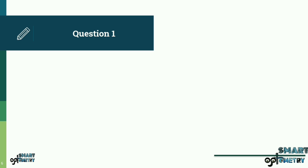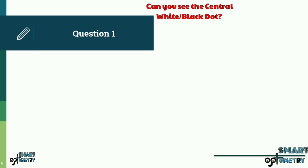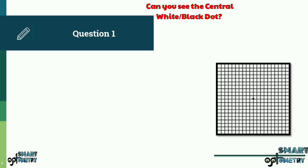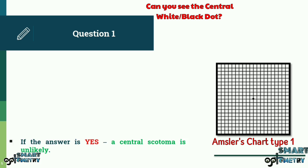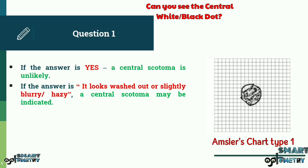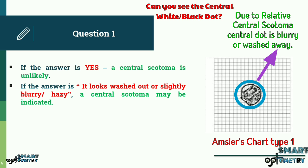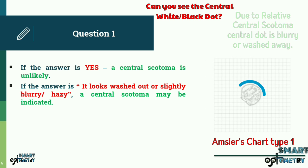Let us begin with the questions that we need to ask the patient in order to perform the Amsler's grid test. Question 1: Can you see the central white or black dot? The test begins with the patient viewing the chart 1 type Amsler's grid. The purpose of this question is to rule out a central scotoma, i.e. a central visual loss. If the answer is yes, a central scotoma is unlikely. If the answer is that it looks washed out, slightly blurry, or hazy, a central scotoma may be indicated. The patient is then asked to outline the limits of the area that appears blurry or hazy on the grid with a finger or a pen.